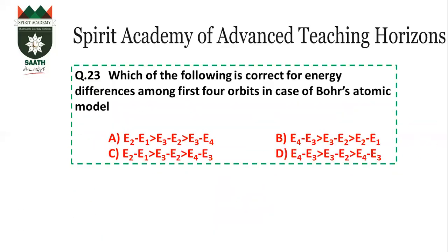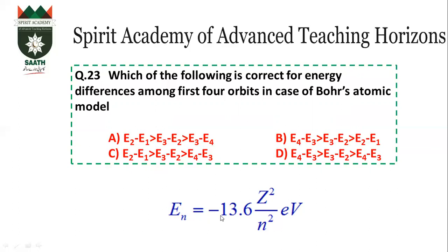Question number 23: Which is correct for the energy difference? The energy formula is E = -Z²/n² (in electron volts), or 1313/n² in kJ/mol. As n increases, the energy value gets smaller. A smaller n value gives a larger energy difference. Therefore, E₂−E₁ > E₃−E₂, meaning the energy difference is greater at lower orbits.